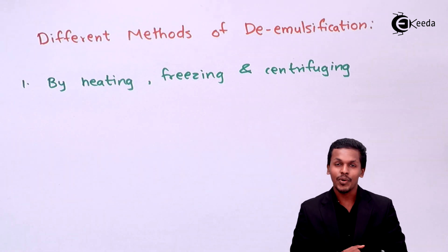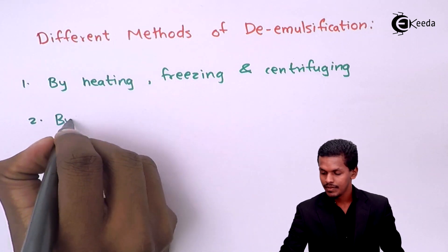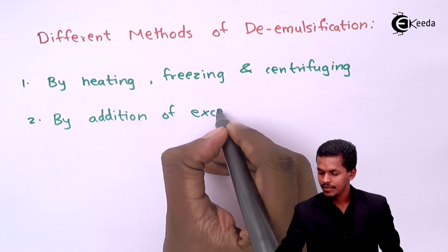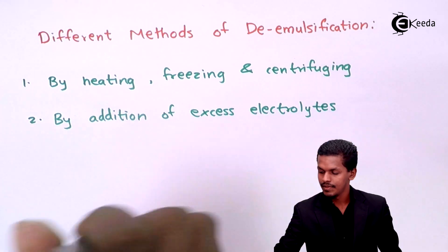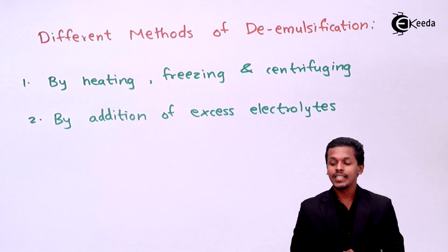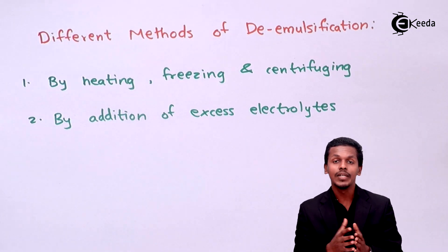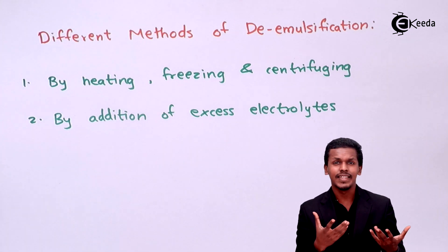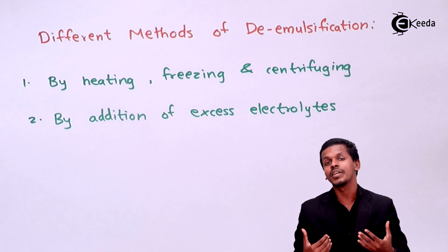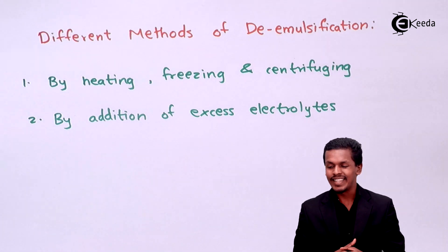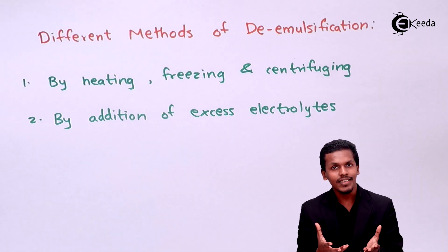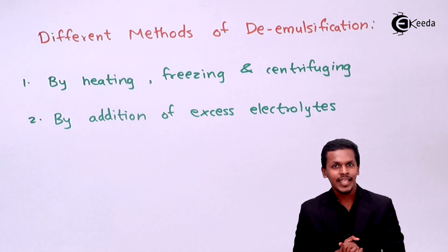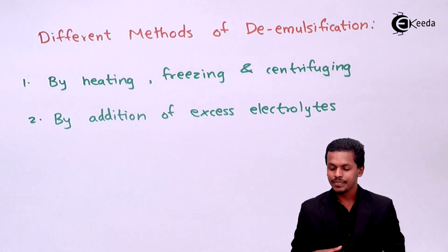The second method is by addition of excess electrolytes. By adding excess electrolytes, we can perform demulsification, where the colloidal particles of the dispersed phase are easily separated from the dispersed medium.